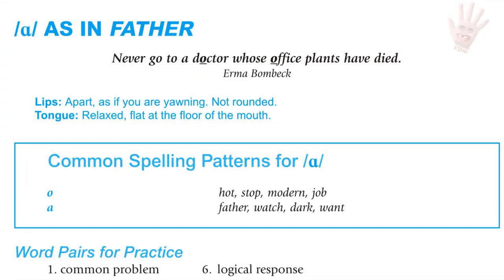Ah as in father. For the Ah sound, the lips are apart as if you're yawning — not rounded. The tongue is relaxed and flat at the bottom of the mouth. Common spelling patterns: O as in hot, stop, modern, job; and A as in father, watch, dark, and want.